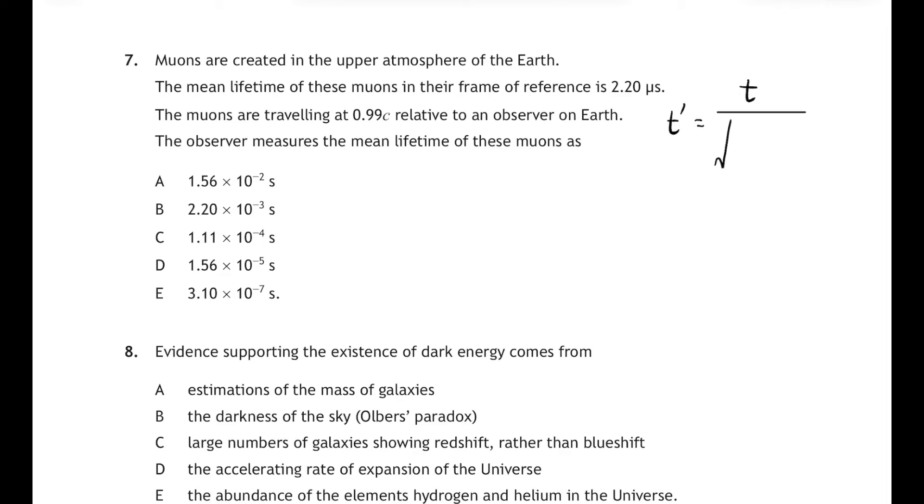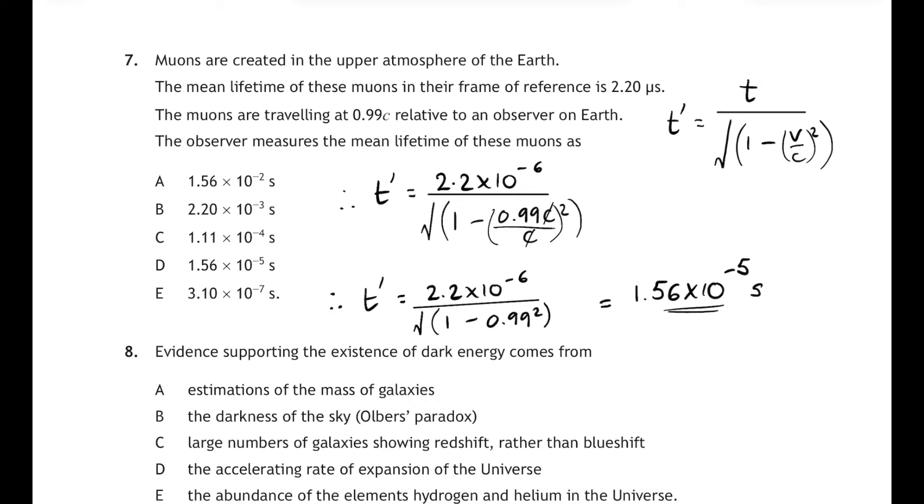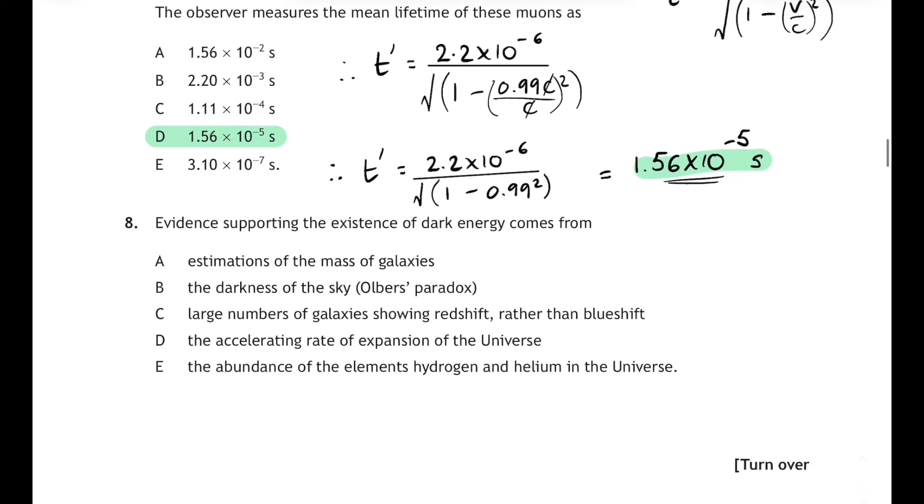Well we need our relativistic time dilation relationship here so let's jot that down. The t dashed equals t over the square root of 1 minus v over c all squared. So the observer will measure a time t dashed equal to the muon's lifetime in their frame of reference, that's the 2.2 times 10 to the minus 6, divided by the square root of 1 minus v... 0.99 squared. Now there's a trick you can do here. The v is 0.99 c all over c, so you can cancel both those c's out and don't forget to square that. So let's cancel out those c's and then simplify it. So t dashed 2.2 times 10 to the minus 6 over the square root of 1 minus 0.99 squared. And if you do all that carefully on your calculator you'll get an answer of 1.56 times 10 to the minus 5 seconds, and that corresponds to answer D. That's number crunching on your calculator.